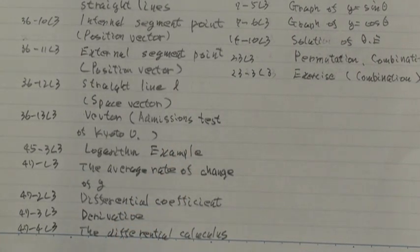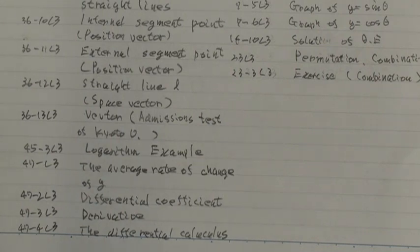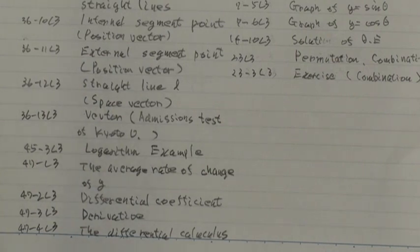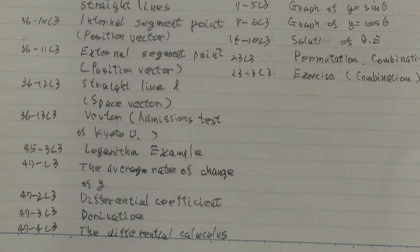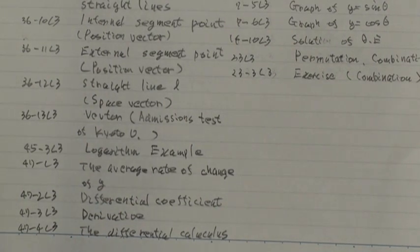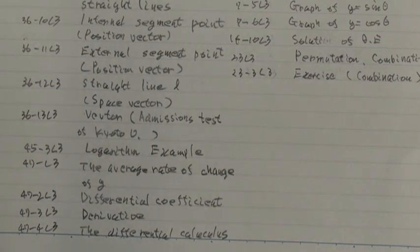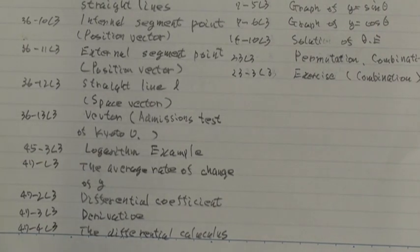47th branch 13LT, the average rate of change of Y. 47th branch 13LT, differential coefficient. 47th branch 13LT, derivative. 47th branch 4LT, the differential characteristics.